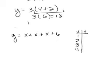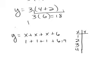So if I put 1 in for x, I would have 1 plus 1 plus 1 plus 6, because I'm going to put 1 in every place that there's an x. So that would give me 1 plus 2 — which is 3 — plus 6, which would be 9.